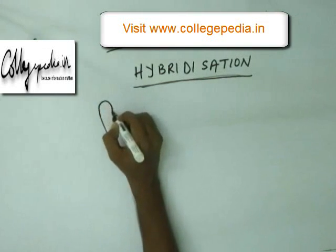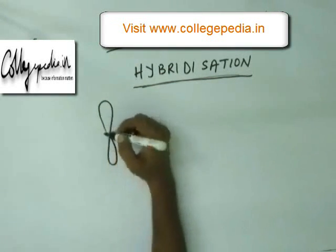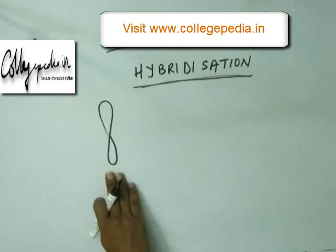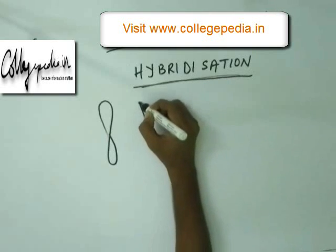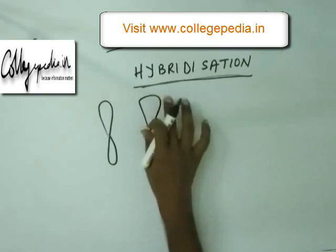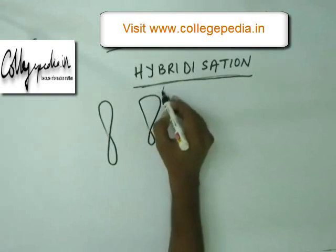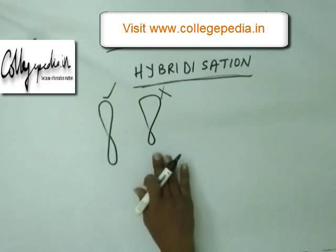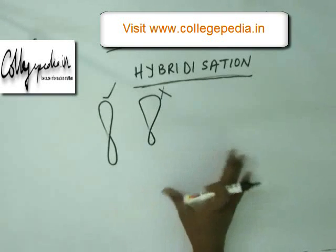If the orbital is empty, there is no need to hybridize it because there are no electrons inside the orbital. Neither is this orbital making any bond nor is it containing any electrons, so we will not unnecessarily hybridize it. If the orbital is empty, we will keep it in pure orbital form.